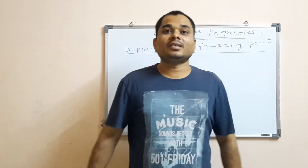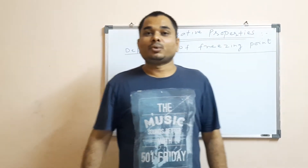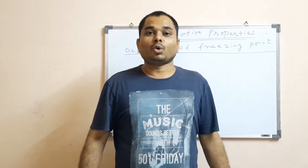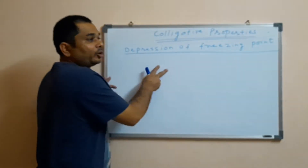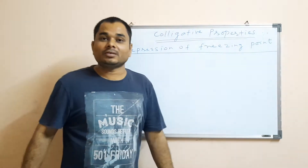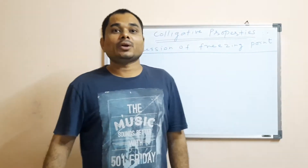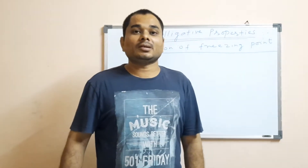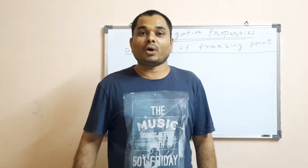Hello students. We are discussing the chapter Solutions, and up to the last lecture we have discussed colligative properties. We have discussed two colligative properties: lowering of vapor pressure and elevation of boiling point. Today we are going to discuss the third colligative property, that is depression of freezing point.